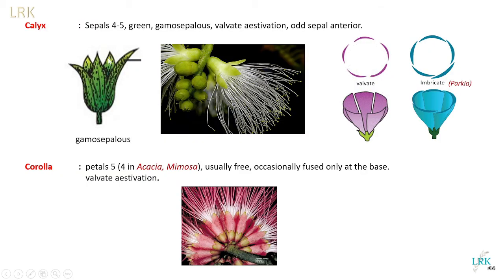Regarding the calyx, the sepals are four or five in number, green in color, and gamosepalous — all sepals are fused. They show valvate aestivation, where the edges of the sepals just touch each other without overlapping. The odd sepal is anterior. In Parkia, imbricate aestivation is seen — one sepal is completely inside, the opposite sepal is completely outside, and the three remaining sepals have one edge inside and one edge outside.